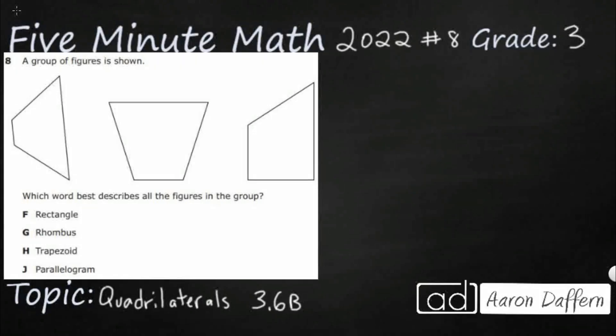Hello and welcome to 5-Minute Math. Today we are looking at the third grade concept of quadrilaterals. This is standard 3.6b in the great state of Texas and we are using item number 8 of the 2022 released STAAR test.